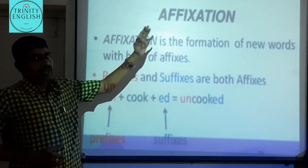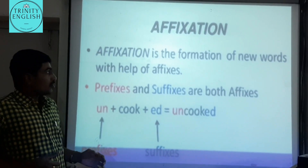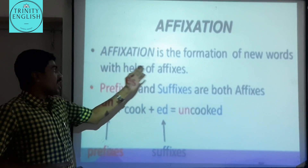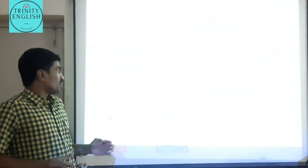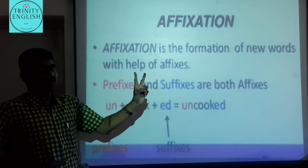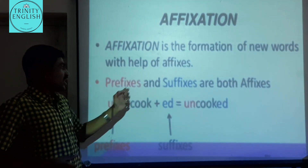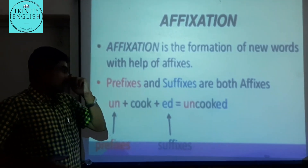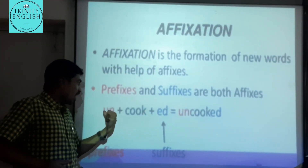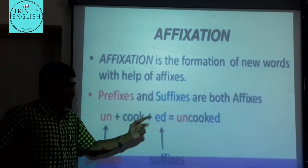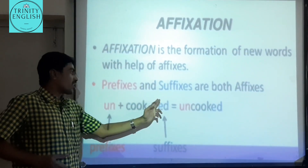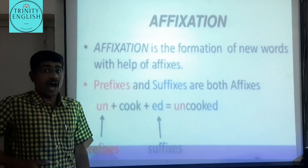Affixation is the forming of new words with the help of affixes. Affixation includes prefixes and suffixes — both are called affixes. For example, with the word 'cook': if you say 'uncooked,' the 'un-' is the prefix; 'cooked' uses a suffix; and when both are combined, the whole form is called an affix, as in 'uncooked.'